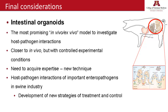To finish, I would like to highlight how important and promising this in vitro — or ex vivo, as you prefer — model is to investigate host-pathogen interactions. They are closer to in vivo but you have a little bit of control. You can have them in the lab and manipulate them. Most importantly, knowledge of host-pathogen interactions is essential. Without it, it's not possible to develop good vaccines or good strategies or alternatives for antimicrobials as we need right now. This is why we believe this model is so promising to understand enteric diseases in pigs.